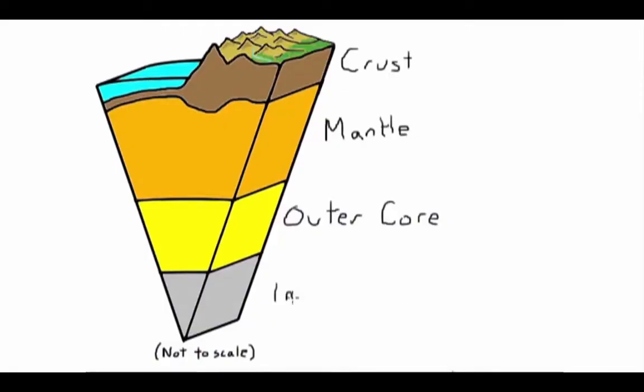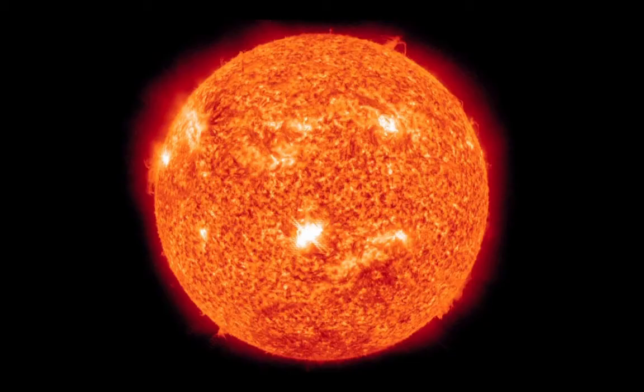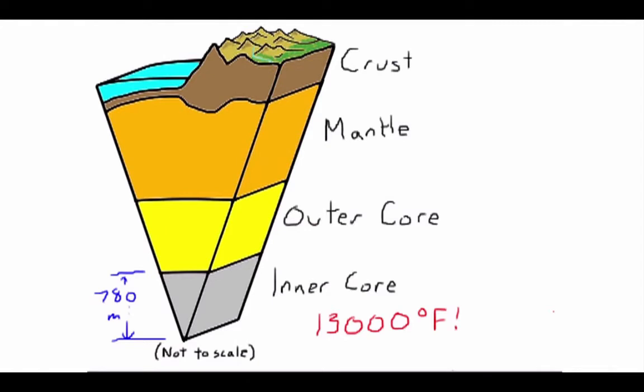And here we are at the center of the Earth: the inner core. The inner core is a solid layer with a thickness of 780 miles, made of solid iron and nickel. The inner core may have a temperature of up to 13,000 degrees Fahrenheit, which is hotter than the surface of the sun. Many scientists believe it is kept in the solid state because of the extreme pressure from the other layers.